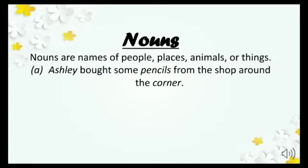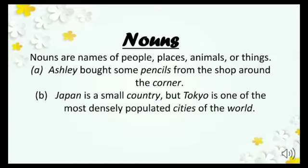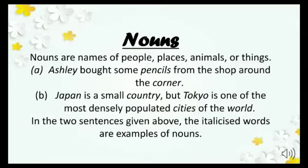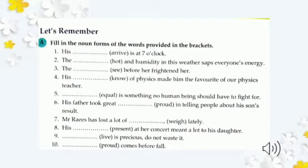Sentence number two: 'Japan is a small country but Tokyo is one of the most densely populated cities of the world.' Tokyo and Japan are places, so they are nouns. Country and cities are also nouns, and world is a place — so all of these are nouns. You have seen here what the nouns are in a sentence.